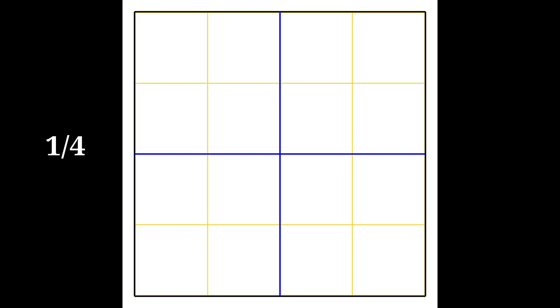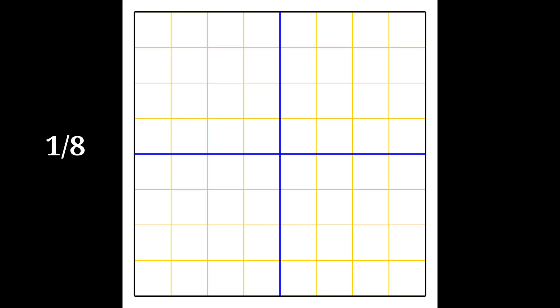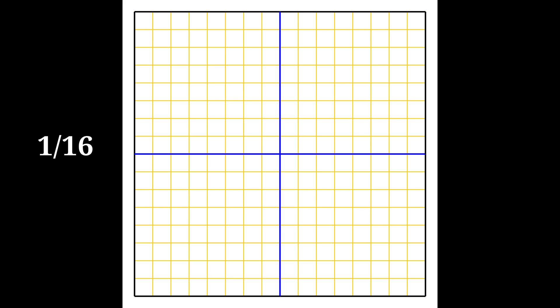First, we start with the grid size. This time it's a 16x16 square grid, which is easier to prepare and only involves dividing the square into halves until you have 16 divisions to use as our coordinates.